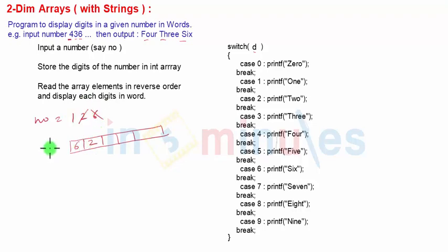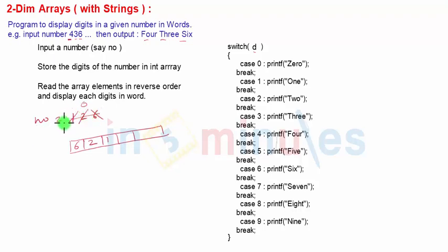Then we divide by 10 to get 1, and 1 mod 10 gives 1. Then divide by 10 to get 0, so we stop. This is similar to the digit-reversal or Armstrong number program. When the number reaches 0, we stop. Now we have stored the digits in reverse order: 6, 2, 1 in the array.